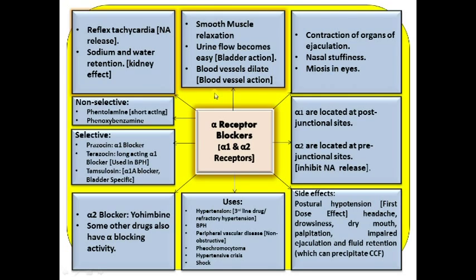As far as classification is concerned, we have non-selective and selective alpha blocking agents. Non-selective alpha blocking agents are phentolamine and phenoxybenzamine. Phentolamine is a short-acting one; phenoxybenzamine is orally available. Phentolamine, being a short-acting non-selective alpha blocker, causes reduction in blood pressure and is used for diagnostic purposes in cases of pheochromocytoma — a tumor of the adrenal medulla that secretes a lot of catecholamines, causing severe hypertension.